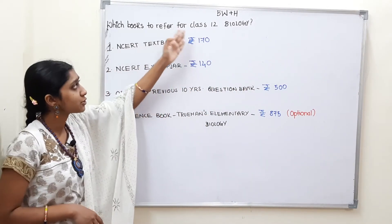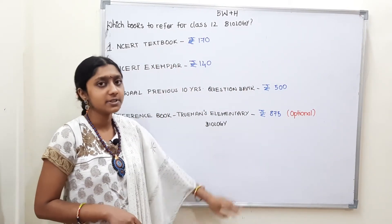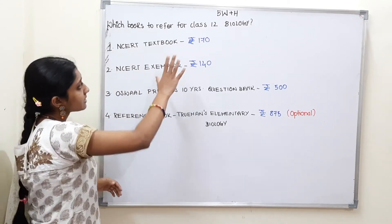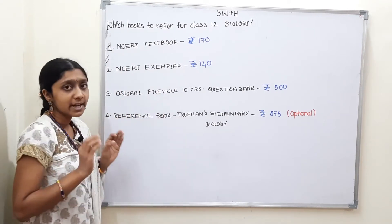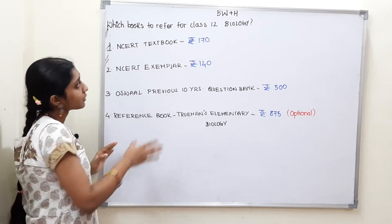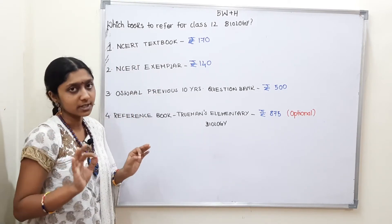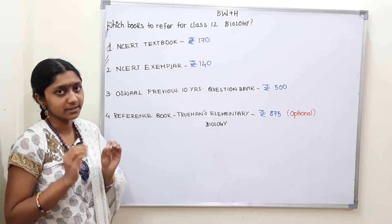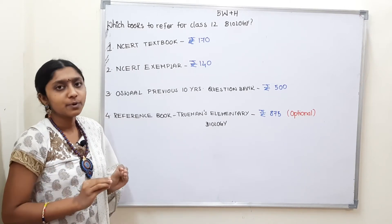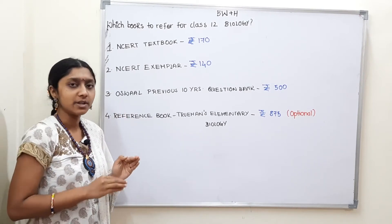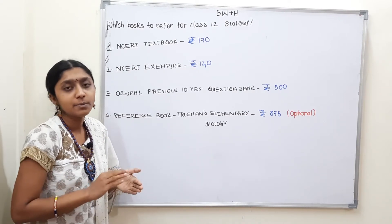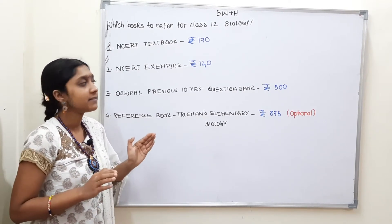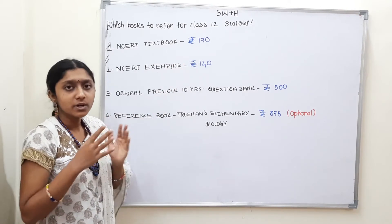Which books to refer for Class 12 Biology? First, CBSE, and next, State Board. For Class 12 Biology CBSE, it is called the NCERT textbook. It is a single volume, and that is the most important book for Biology. It is more than enough because there is a lot of content.